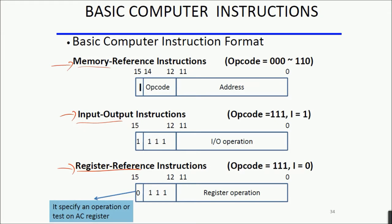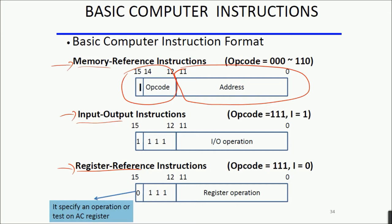We already saw that our instruction had the first 12 bits dedicated to the address of the operand and the remaining bits for the opcode. Now going into detail: the opcode is not four bits but three bits, and the fourth bit — the MSB — has some other functions. Starting with memory reference instructions, we need a 12-bit address because we want to address 4096 locations (2 raised to the power 12), and we use a 3-bit opcode.